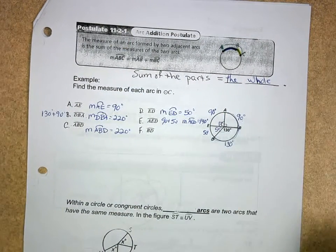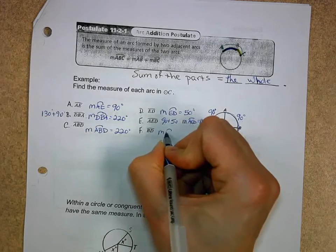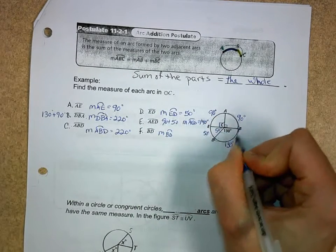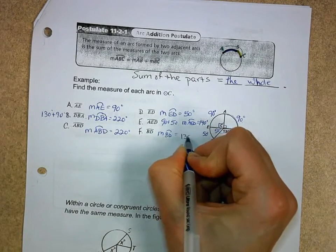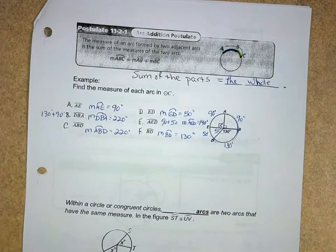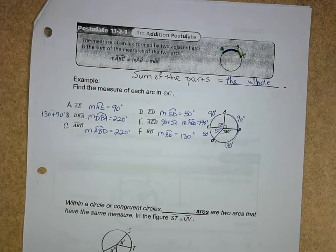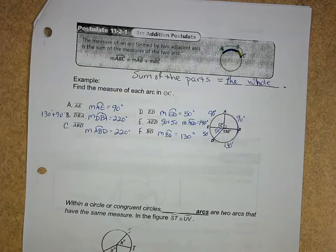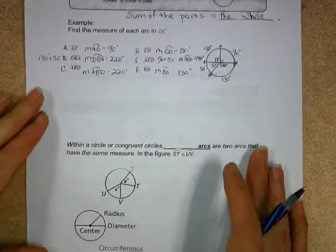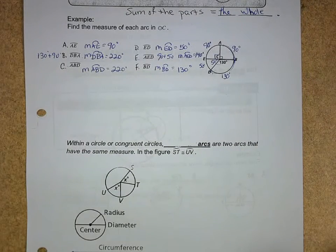Then we go to the measure of arc BD. Well, arc BD is just 130 degrees. I love this stuff, guys. It's just fun to work with circles after working with all the other stuff we've had before. All right. Now on the next one...